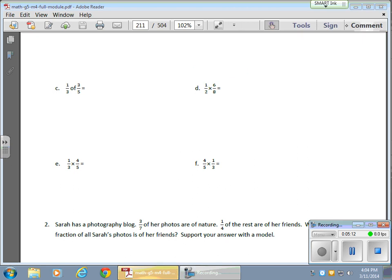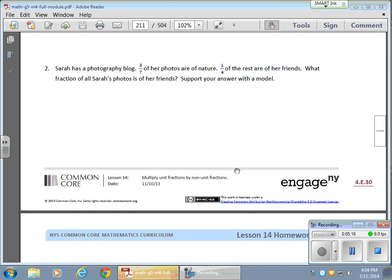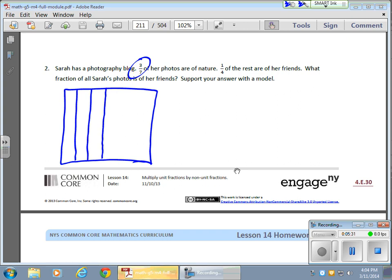While I'm at it, I might as well do one of these word problems here. We have Sarah. She has a photography blog. Sounds like fun. Three-sevenths of her photos are of nature. So I'm going to start right away with an area model. And I'm going to start labeling areas. It looks like three-sevenths, so I'm going to split this into sevenths. One, two, three, four, five, six-sevenths. So three of these, one, two, three, are of nature. So I'm going to put an N. Nature, nature, and nature.